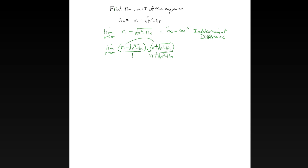That creates a fraction. When we FOIL out the numerator we get n squared; the middle terms cancel and we get minus the quantity n squared minus 11n, all over n plus the root of n squared minus 11n. The minus applies, the n squares cancel, and we've turned this into the fraction 11n over n plus the root of n squared minus 11n.